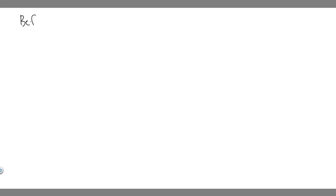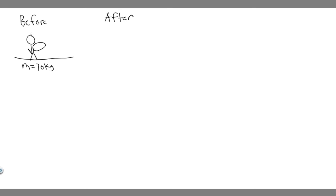Let's go ahead and draw what's going on before and after we throw the rock. So before, it's just going to be us standing, and we have this rock. Here's our person standing on this piece of ice. We know the mass of the person is 70 kilograms and the mass of the rock is 3 kilograms. We're both going to be standing still — the rock isn't moving, it's in our hands.